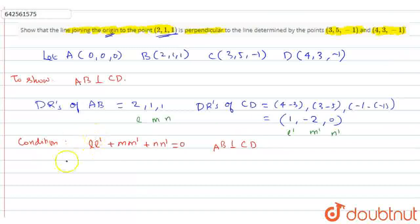Now the product of these two: 2 times 1 is 2, plus 1 times -2 is -2, plus 1 times 0 is 0. So 2 minus 2 is 0, plus 0 is also 0. We have found that LL' + MM' + NN' = 0. So that means AB is perpendicular to CD.